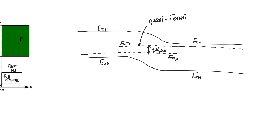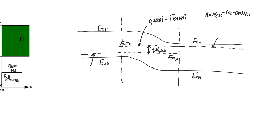Particularly important for the p-n junction is what happens in the depletion region and at the interfaces of the neutral zones. In the neutral zones, far away from the interface, we can return back to a single Fermi level for each of them. A Fermi level is useful because you can use it to calculate charge concentrations: N is equal to NC · e^(-(EC - EF)/KT), and P is equal to NV · e^(-(EF - EV)/KT). A single Fermi level is used to calculate both electron and hole concentration.